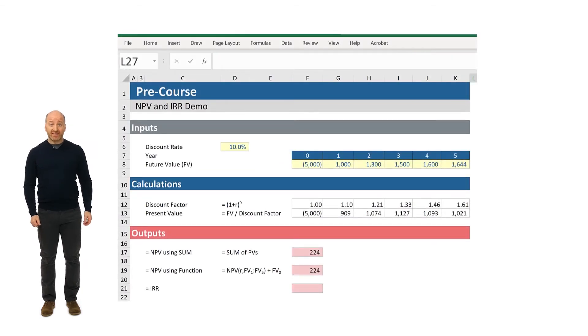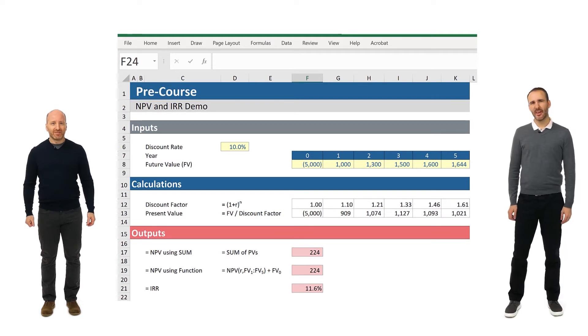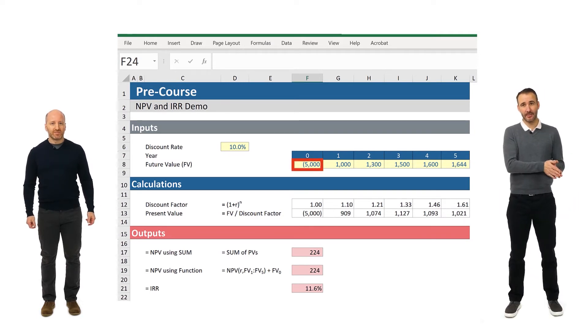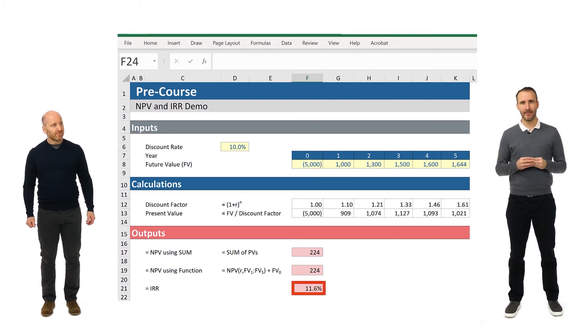So let's do this so we can finally answer Hayden's question. We will go into cell F21 and type equals IRR and open our parentheses. And then we will select the range from F8 to K8, close the parentheses and hit enter. And what do we discover? If I can buy this investment for 5,000, I will achieve an IRR of 11.6%. So I was right. It would definitely be better than a 10% return. Way better than 10%.